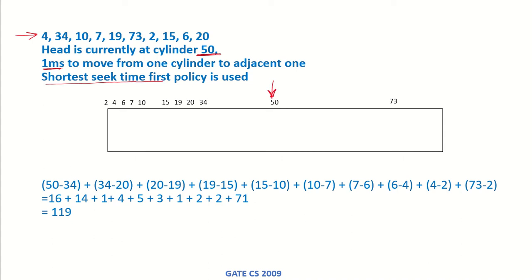If the head is currently at 50 and we are following shortest seek time, then we know that to travel to cylinder 34 would be the least because these are all the requests. I have put them all over here in that order. So 2 which is here, 4 which is this track, cylinder 6, 7, 10 and so on. I have put all of these and I have just shown the cylinders. So the head is currently here.